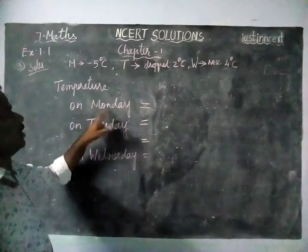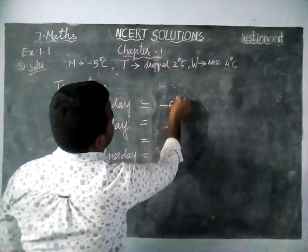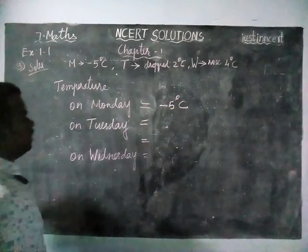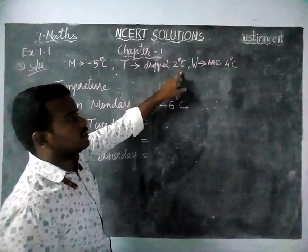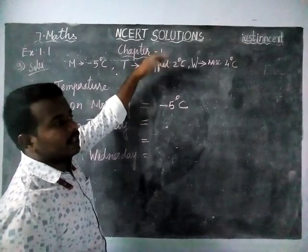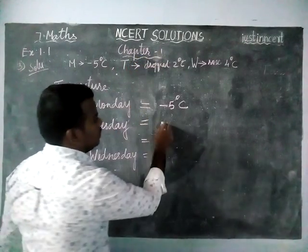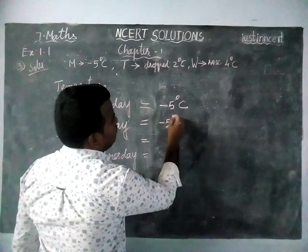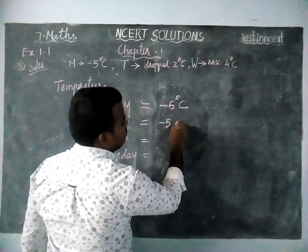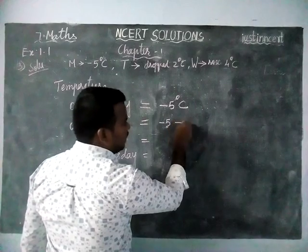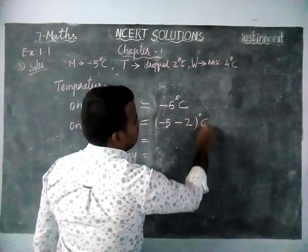So now we are going to check Monday first. Monday: minus 5 degrees Celsius. Then on Tuesday it dropped by 2 degrees Celsius. The meaning of drop is reduced, so we have to subtract 2 degrees Celsius. So minus 5, then we are going to subtract minus 2 degrees Celsius.